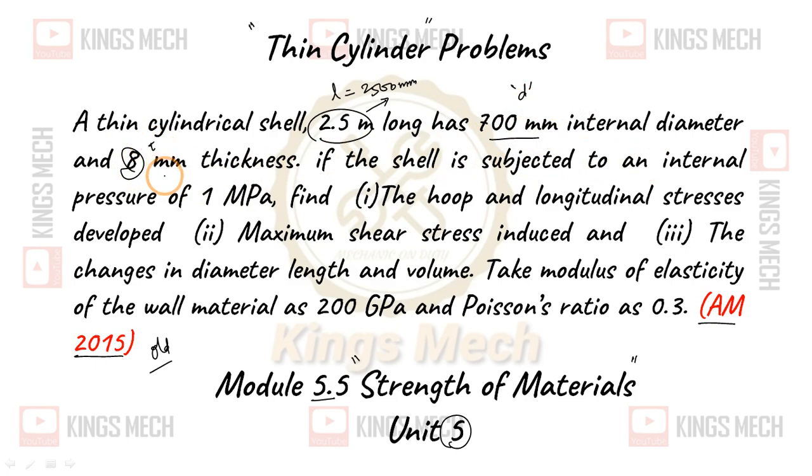If the shell is subjected to an internal pressure of 1 MPa, find the hoop and longitudinal stress, sigma H and sigma L. The maximum shear stress induced, tau max. The changes in diameter, length, and volume.